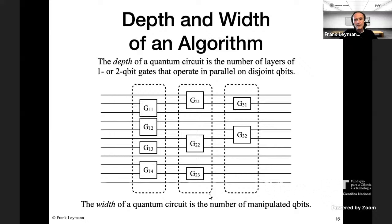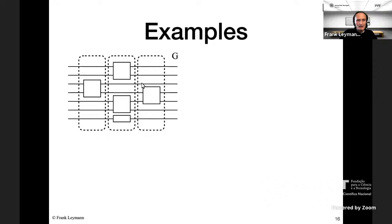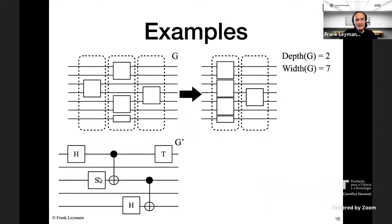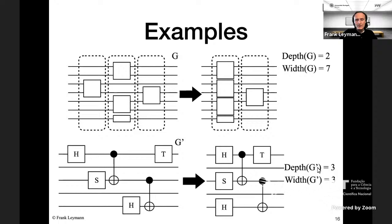Here is an example: the algorithm designer invented three levels, but some gates can be moved to the left because they don't manipulate the same qubits. By shifting gates left, one level becomes empty and the algorithm reduces from depth three to depth two, with a width of seven qubits. In a more concrete example, moving S, H, and CNOT gates left results in a circuit of depth three and width three, since only the first, third, and fifth qubits are manipulated.